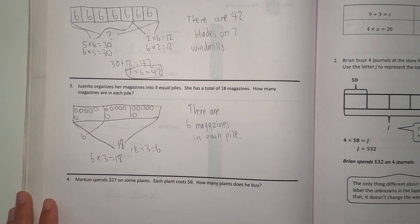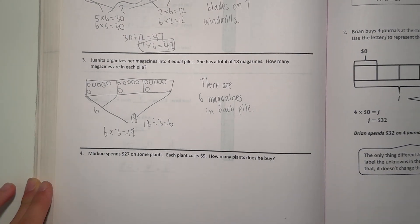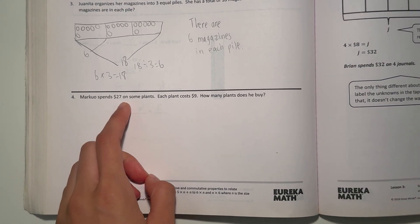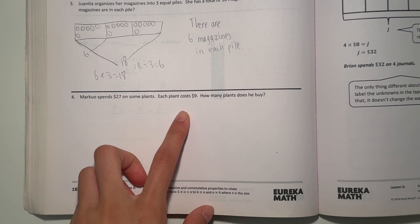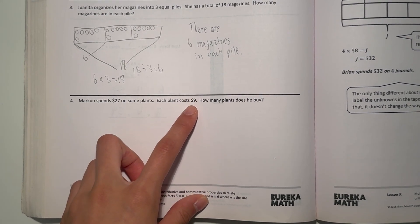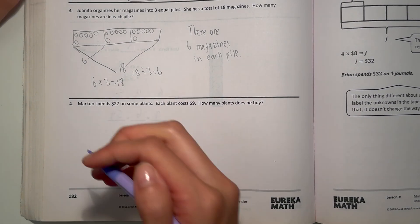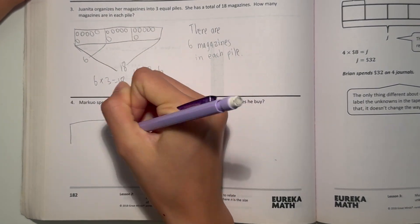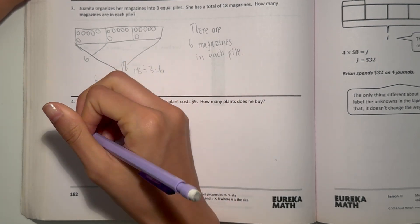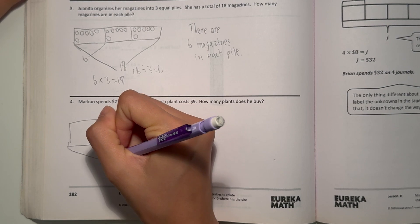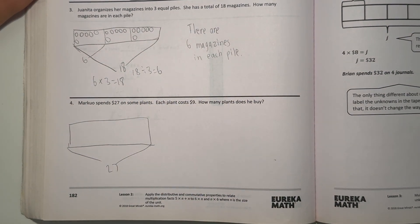Alright, and number 4. Marco spends $27 on some plants. Each plant costs $9. How many plants does he buy? Alright, tape diagram. We know that he spent a total of $27. And since each plant costs $9, we want to find out how many plants he bought.